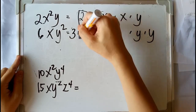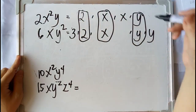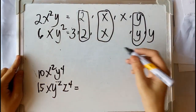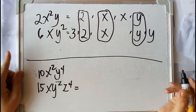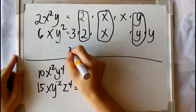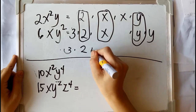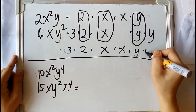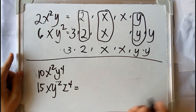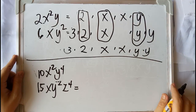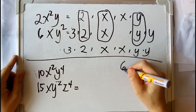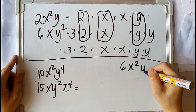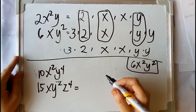Find out if there are common factors. Here we have 2, x, and y. List down the common factors as well as the remaining factors of each expression. So we have 3, 2, x, x, y, and y. Find their product to find the LCM: 3 times 2 times x times x times y times y is equal to 6x squared y squared.